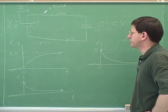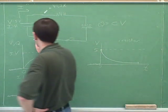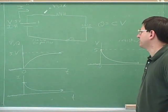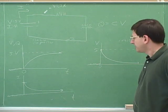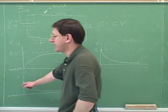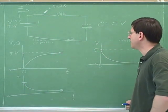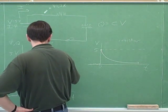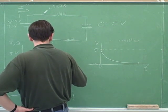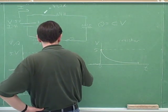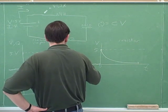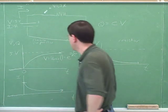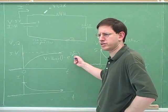What we just went through are the graphs for a charging capacitor. We figured all this out based on the idea that the voltage and the charge can't jump. And since the voltage and the charge can't jump, the current has to jump. There's an equation for all of this — this is an exponential curve.